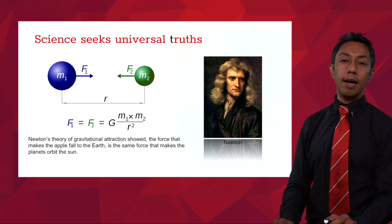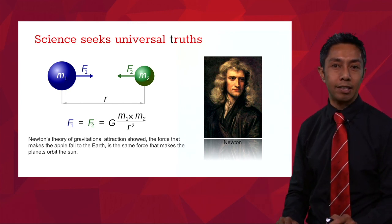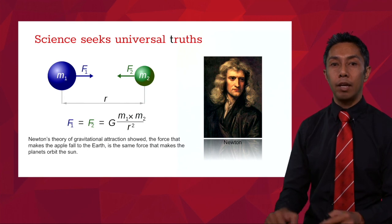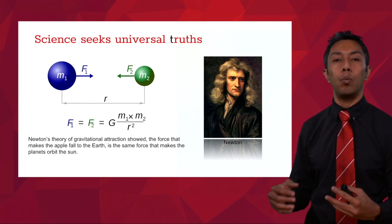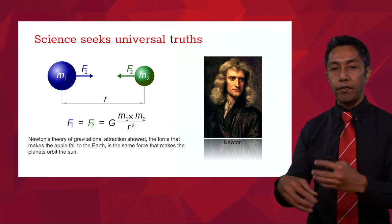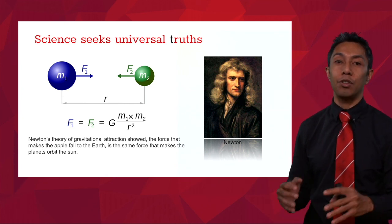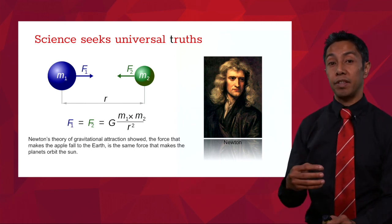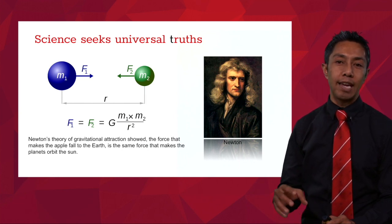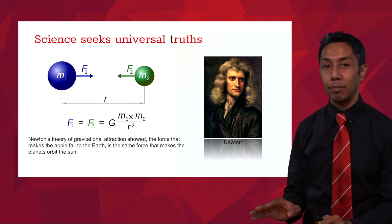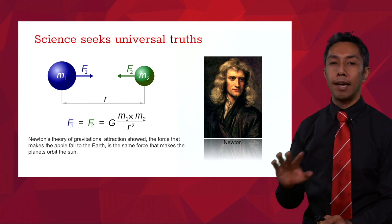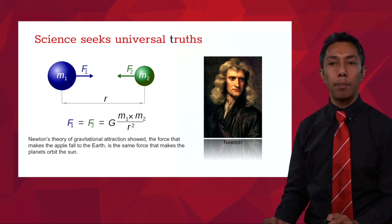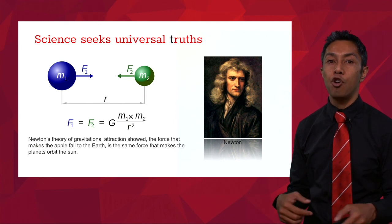Newton was the one who came up with the formula describing the force between two objects with mass anywhere in the universe. Once upon a time, humans thought that the laws governing events on Earth were different to those governing the universe and the heavens. Newton came up with the equation showing that the same force that caused the apple to drop on his head is the very same force which keeps the planets in motion. Whatever laws and truths we come up with in science, we want them to apply no matter where or when you are in the universe.